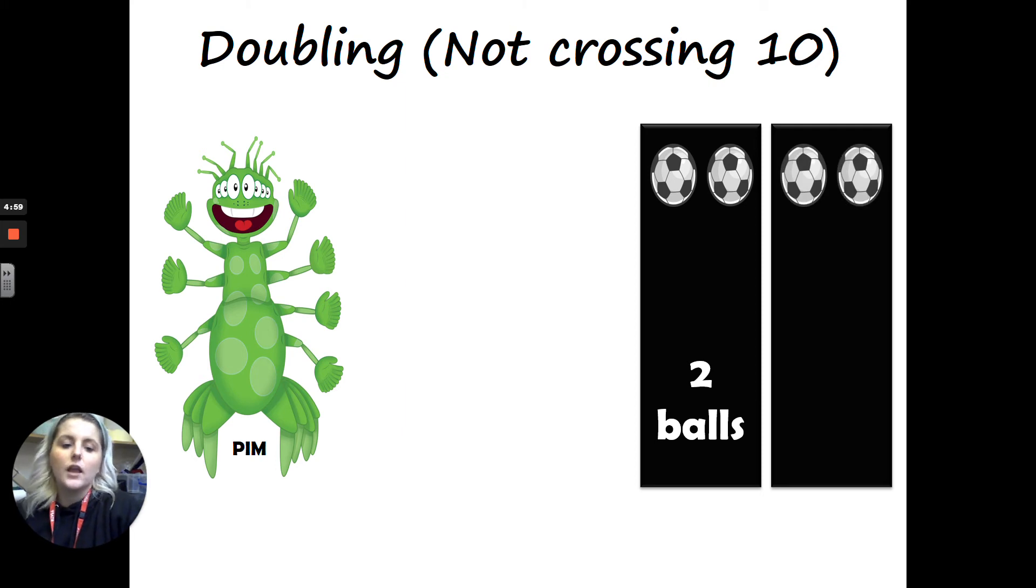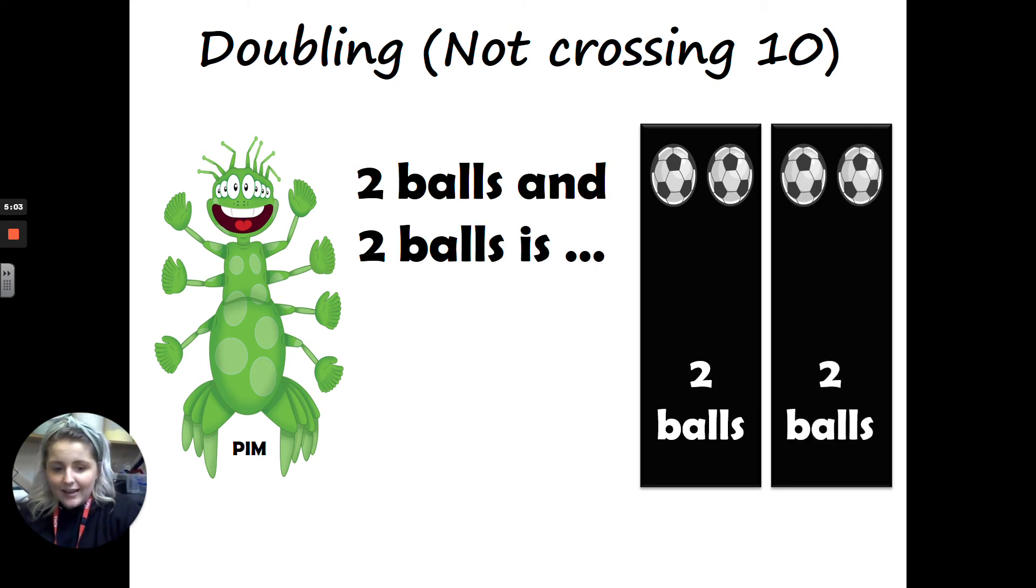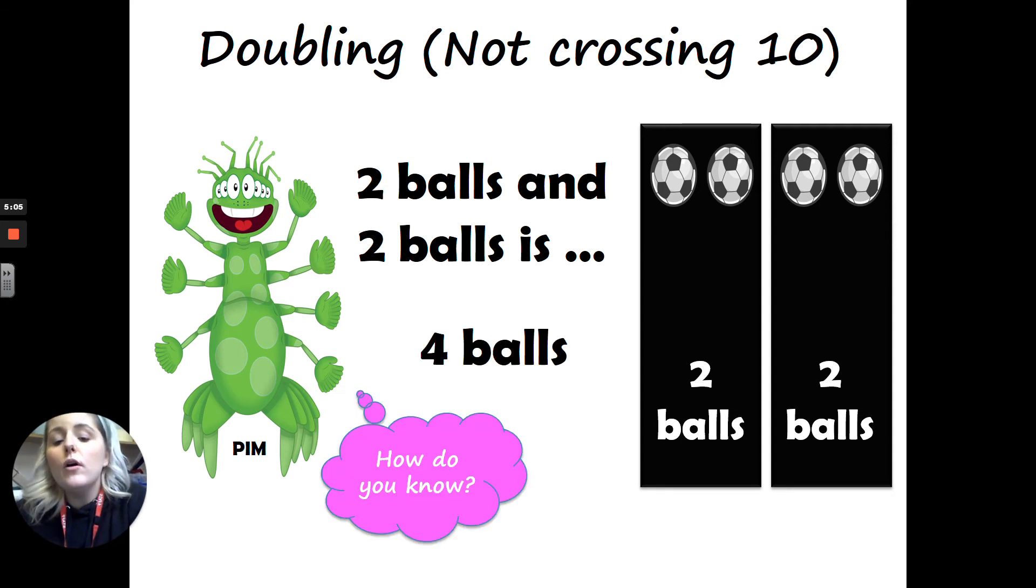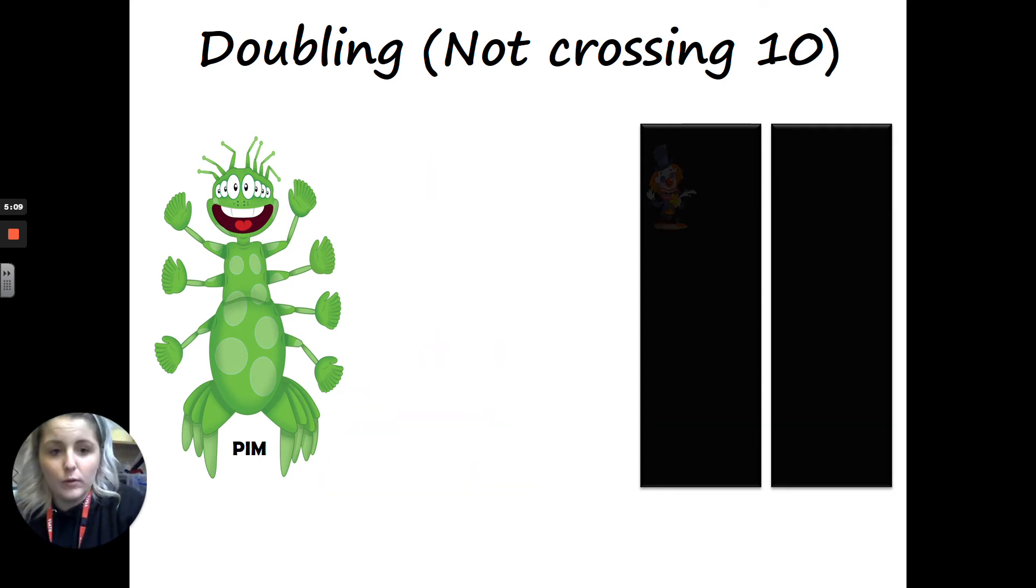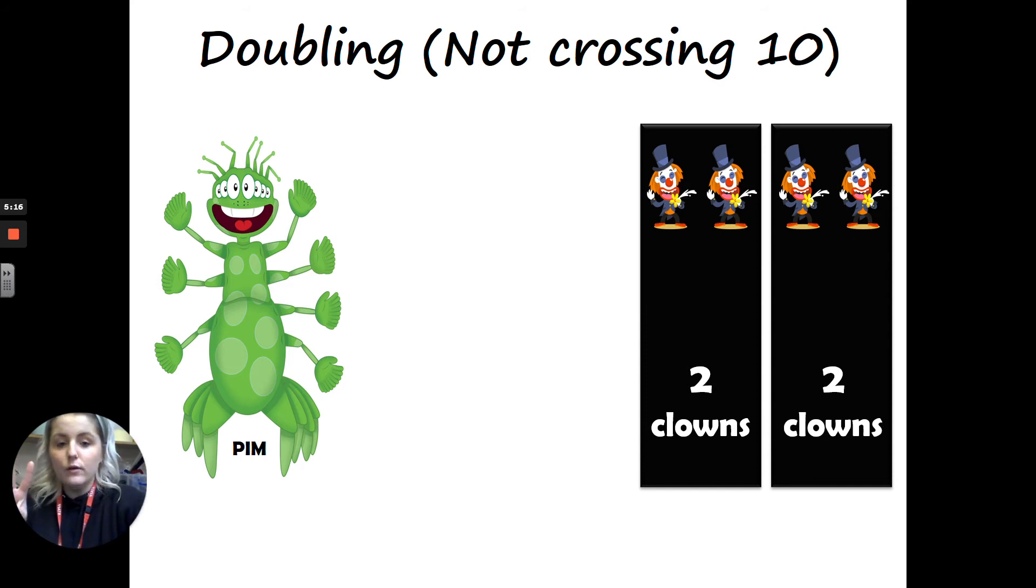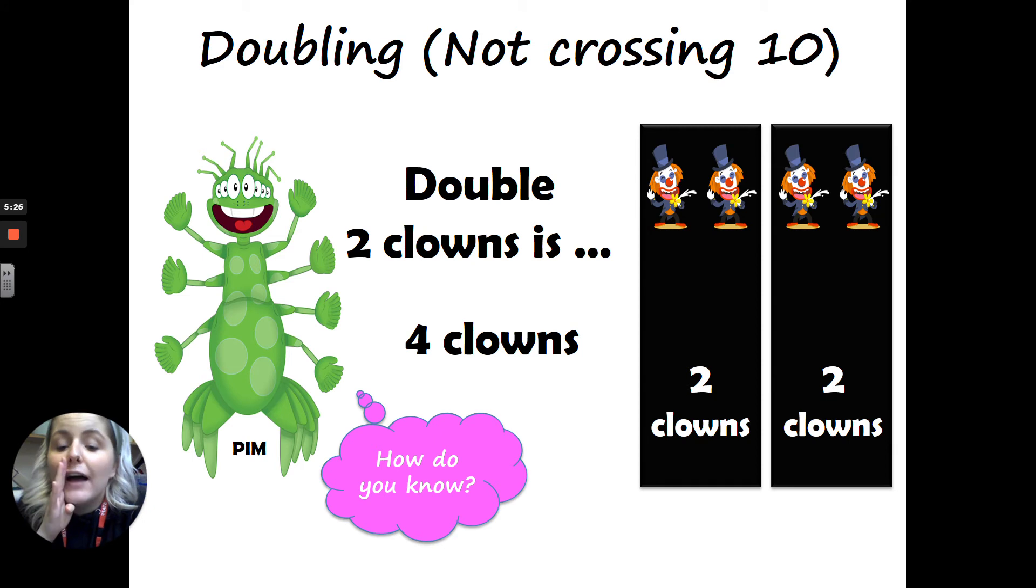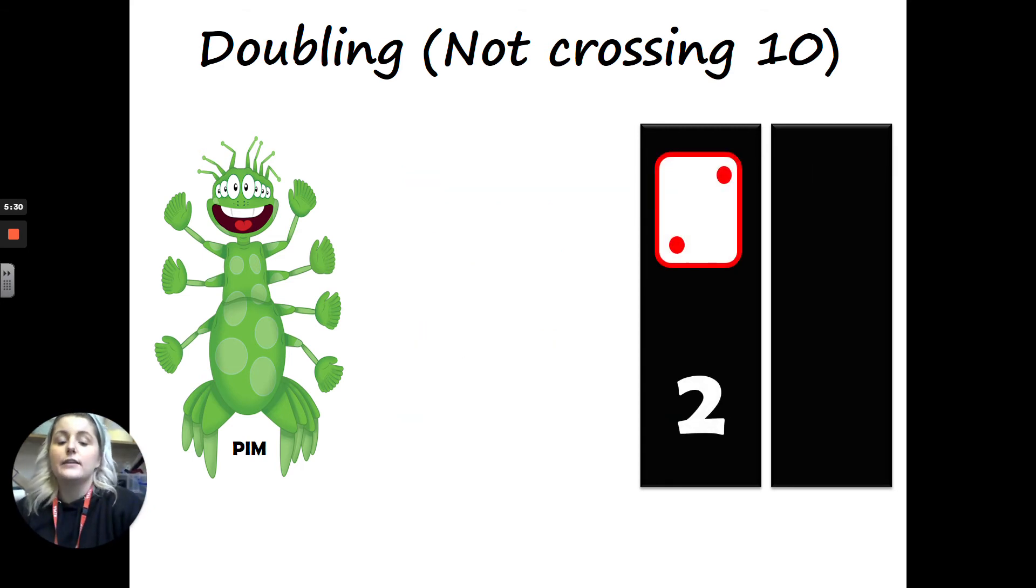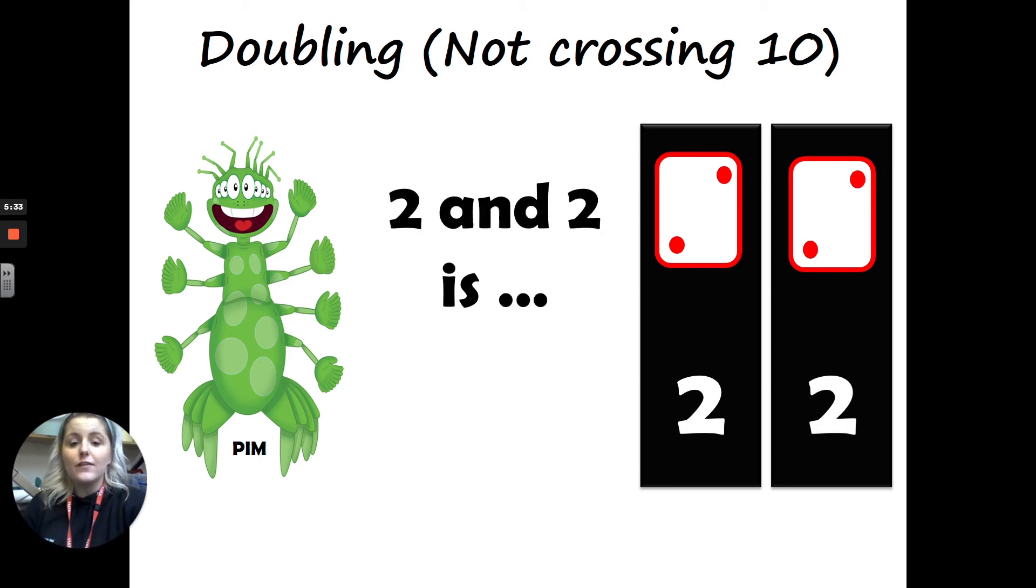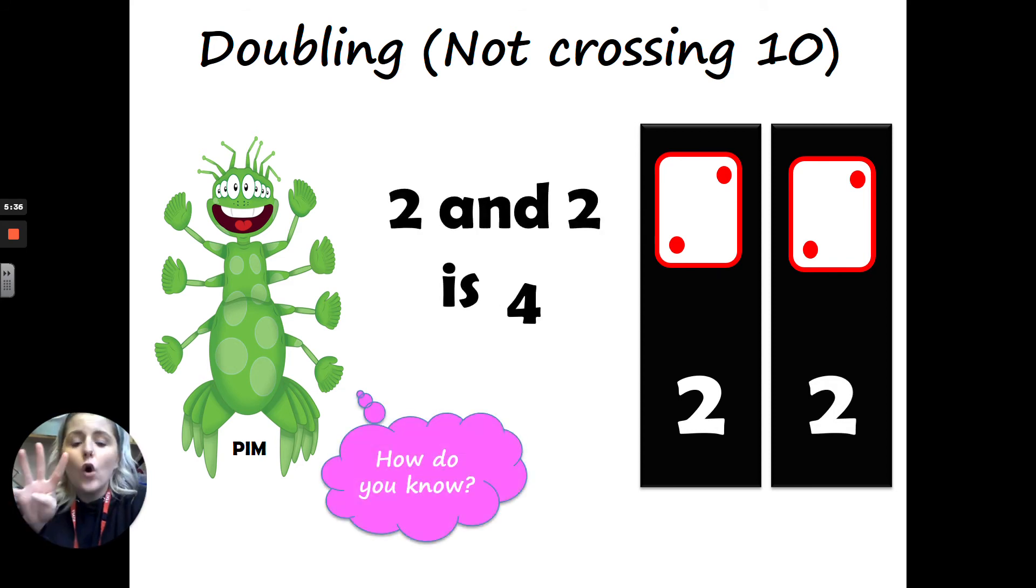Two balls. And another two balls is, shout it out, four balls. Double two balls is four balls. Two clowns, two clowns, add two clowns is, whisper it, four clowns, because double two clowns is four clowns. Okay, two dots on the dice and another two dots on the dice. Push them together, it makes four dots on the dice. Fantastic. And here is our number sentence. We've got a two, add a two, equals four.